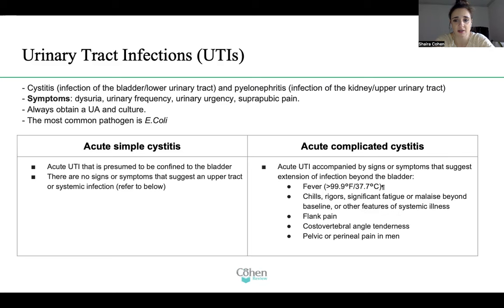Acute complicated cystitis, on the other hand, is an acute UTI accompanied by signs and symptoms that suggest extension of infection beyond the bladder — such as a fever greater than 99.9 degrees, chills, rigors, significant fatigue or malaise beyond baseline, or other features of systemic illness, flank pain, and costovertebral angle tenderness. That's when you pound on the back and if it causes pain, it's a positive sign. Also pelvic or perineal pain in men.